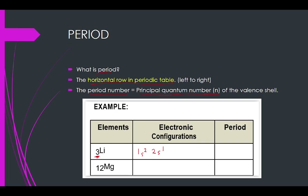For a neutral atom, the number of protons is equal to the number of electrons. Electronic configuration actually refers to electrons, so there are 3 electrons. To find the period, you look for the largest value of n. The largest n here is 2, so lithium is positioned at period 2.